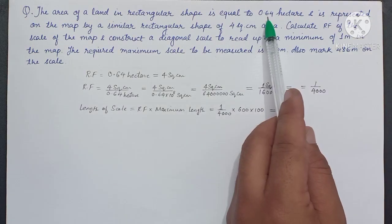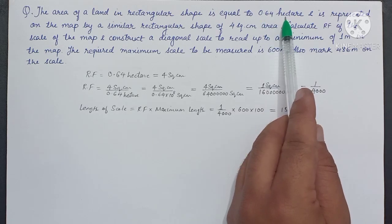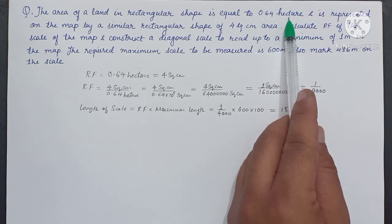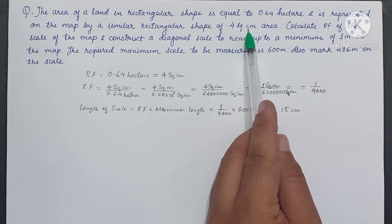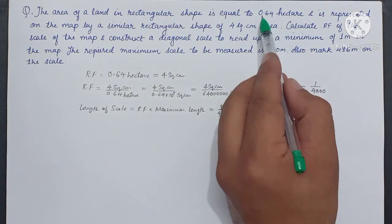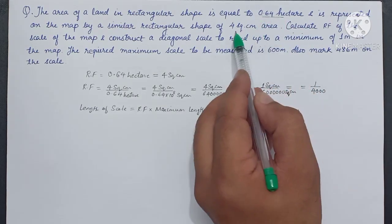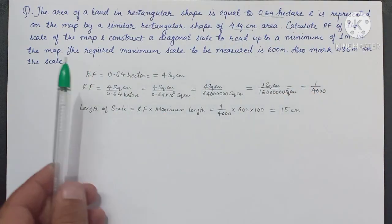Here we have been given 0.64 hectare as the actual dimension, which is to be shown on the map as 4 square centimeter. So with the help of this data we can calculate the representative factor.